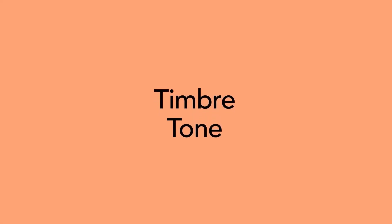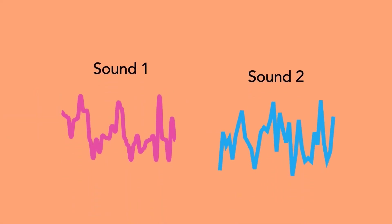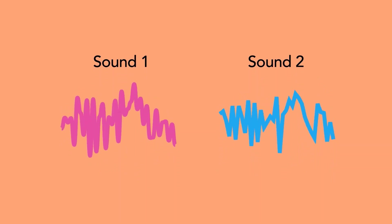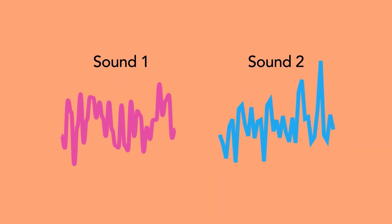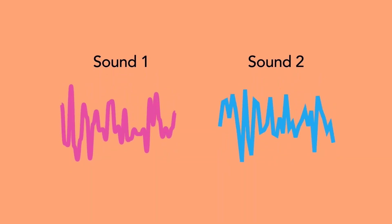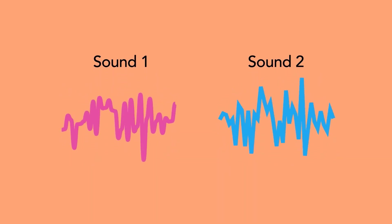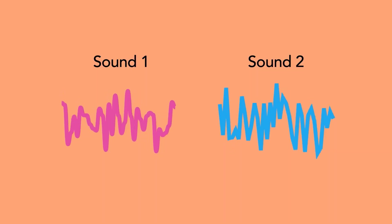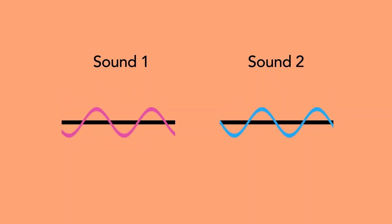Timbre. Another word for timbre is tone. Timbre is the distinguishing characteristic that differentiates one sound from another, despite the fact that they might be playing the same frequency with the same amplitude.